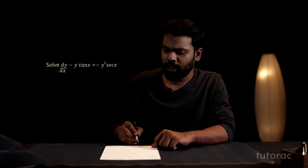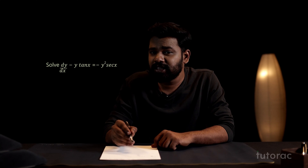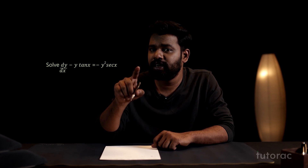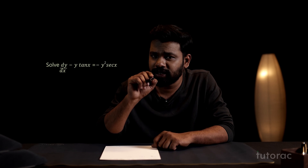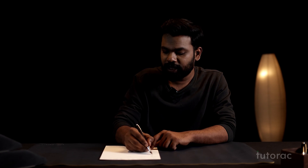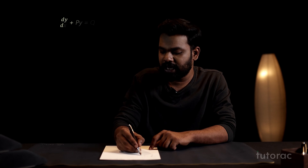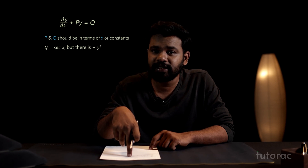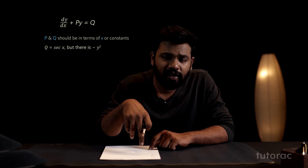But there comes a problem. Look at the right side — it equals minus y²·sec(x). The right side should only contain terms of x or a constant. sec(x) is fine, but there is a minus y². That is not acceptable on the RHS, because in dy/dx + Py = Q, P and Q should be in terms of x or constants. So minus y² is certainly not in the required form.